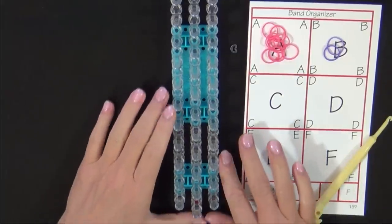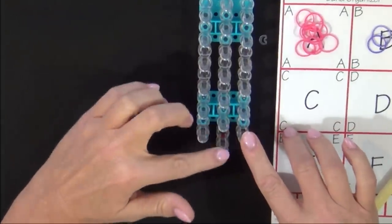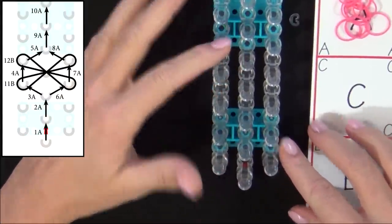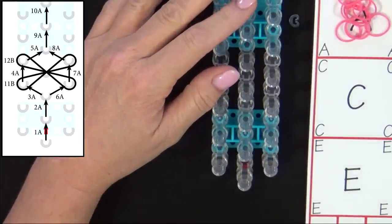Now let's get started. Place your loom so that the red arrow is pointing away from you. Refer to the diagram on your screen to place the 10 bands on the loom.